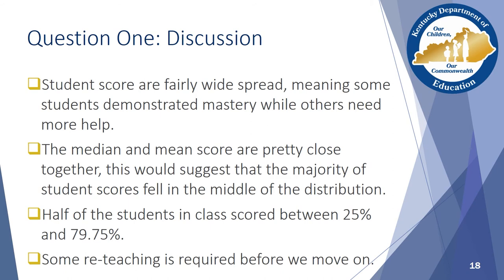Now that you have had a chance to look at the data, let's talk about what it tells us. First, we can look at the spread of the scores. The scores are pretty widely spread from 18% to 100%, which tells us that some students demonstrated mastery while others still need help. The median and mean are pretty close together, telling us that the majority of students fell near the middle of the distribution. We also know that half of our students scored between 25% and 79.75%, which tells us that the majority missed the mastery mark of 80% or above and some reteaching is required.